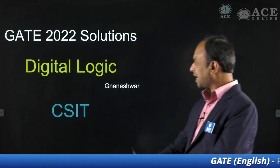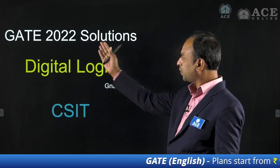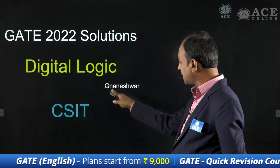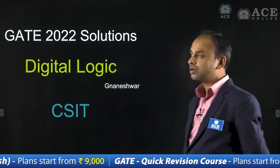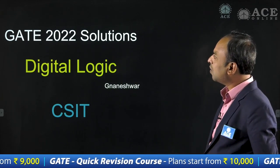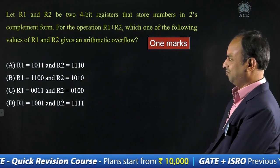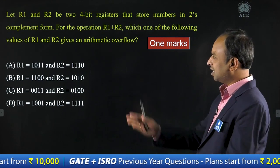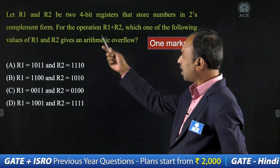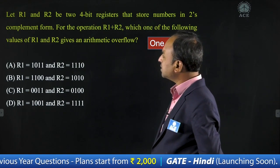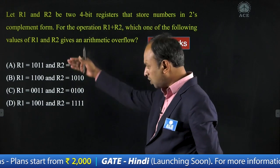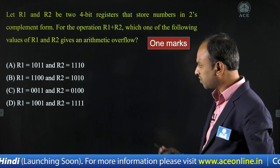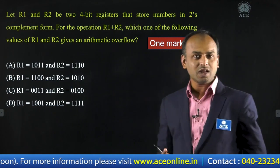Students, it is time to discuss the GATE 2022 solutions for Digital Logic, CSID branch. My name is Jnaneshwar. Now let's look at the first question here. This question is related to overflow. The examiner has given R1 and R2 as two inputs. The condition is to check which option, out of four options, is providing arithmetic overflow.